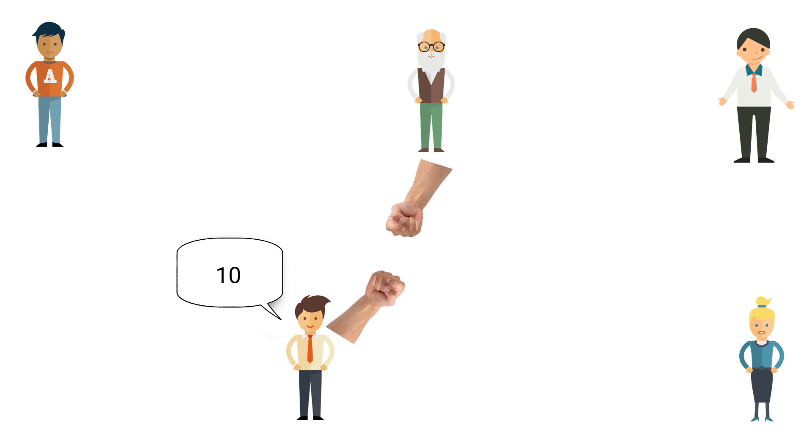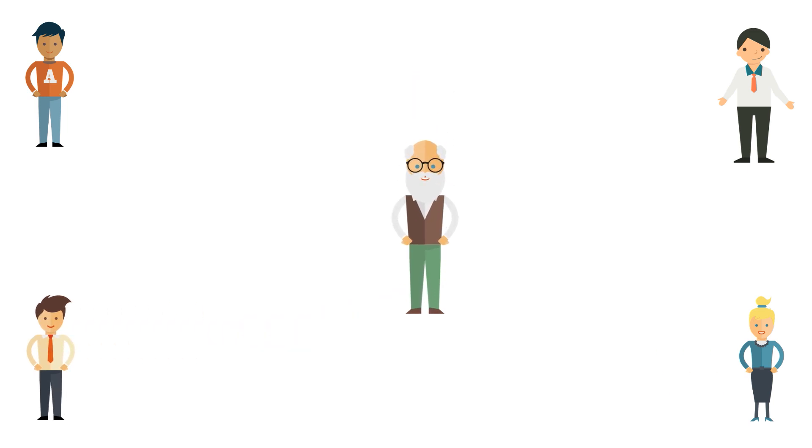5, 10, 5. Wrong. 5, 10, 0. Wrong. 5, 10, 10. He guessed right and he is out of the game. So the other person has lost the game.